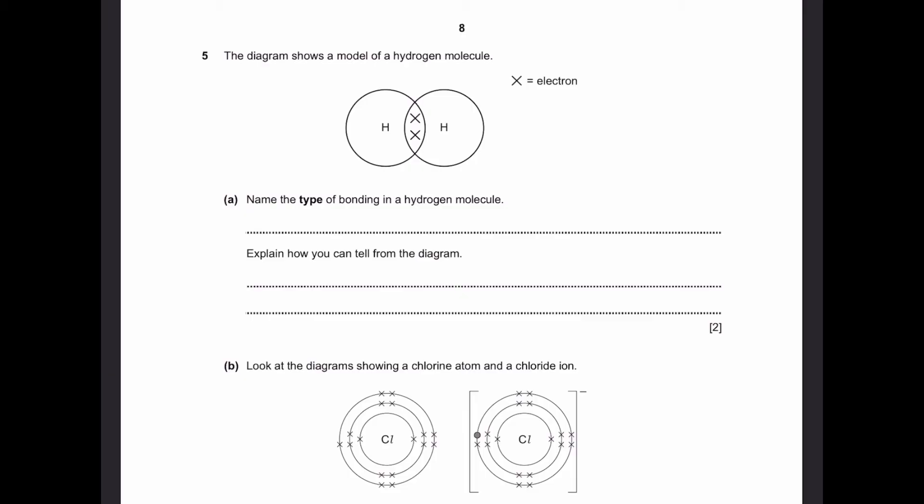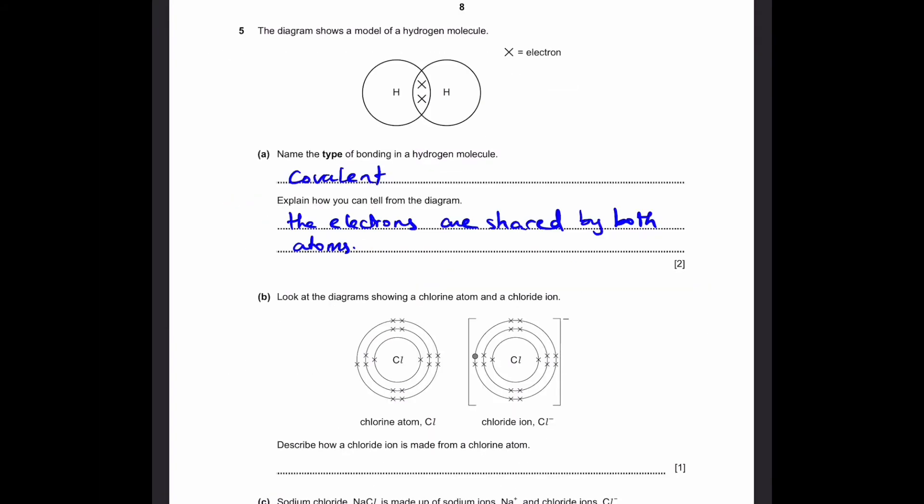Let's go to question 5. The diagram shows a model of a hydrogen molecule. The X's are electrons and the H is the name of hydrogen. Part A: Name the type of bonding in a hydrogen molecule. Explain how you can tell from the diagram. Well, the type of bonding is of course going to be covalent bonding. And how you can tell from the diagram is that the electrons are shared by both atoms. Part B: Look at the diagram showing a chlorine atom and a chloride ion. Describe how a chloride ion is made from a chlorine atom. We can see that all the X's are chlorine's own electrons. But then the chloride ion has one more electron which is a dot and it gets from another atom. So, chlorine gains an electron to form chloride ion.